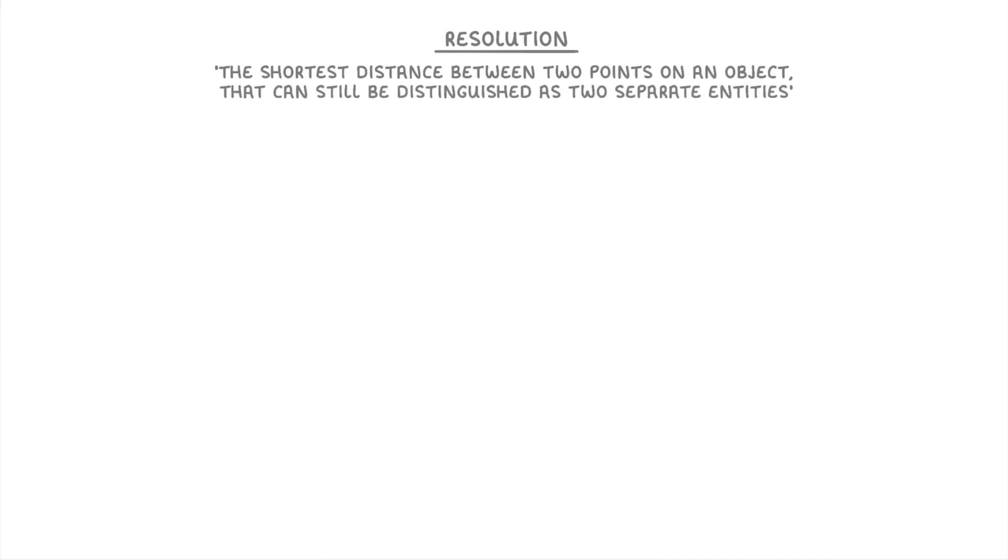The final term you need to know is resolution which we can define as the shortest distance between two points on an object that can still be distinguished as two separate entities. Now I know that this is kind of a complicated definition but it basically means the shortest distance that two parts of an object can be apart without appearing blurred, or in other words it's a measure of how detailed the image is.